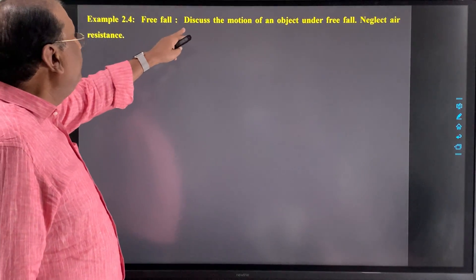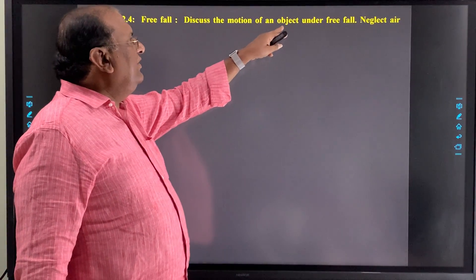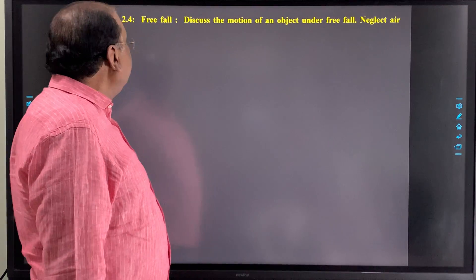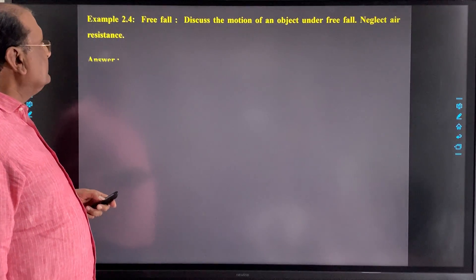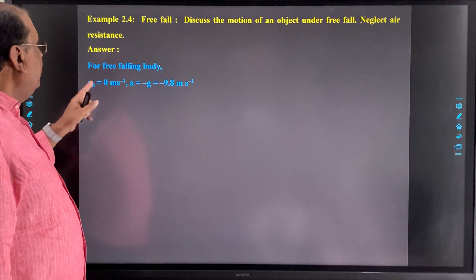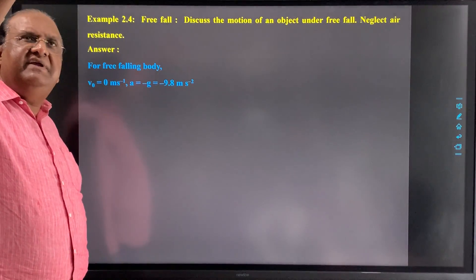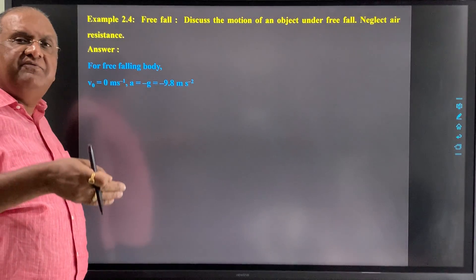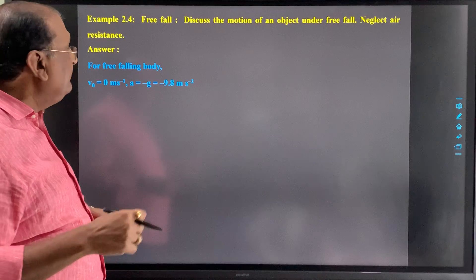Now, next example: free fall. Discuss the motion of an object under free fall, neglect air resistance. For a free falling body, we know when we release the body it is free falling under the effect of gravity.